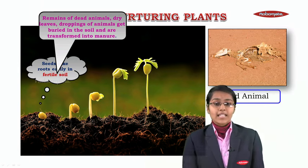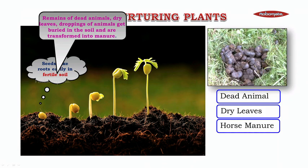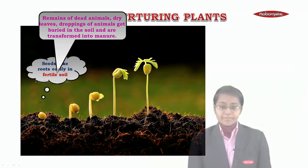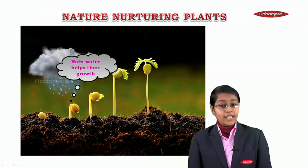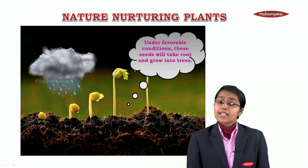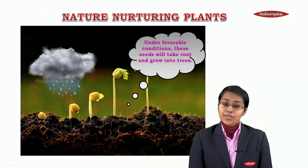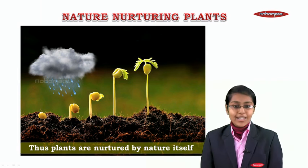Remains of dead animals, dry leaves, and droppings of animals get buried in the soil and are transformed into manure. So dead animals, dry leaves, and animal manure make the soil fertile. Then rainwater also helps the growth of the seed. After that, under favorable conditions these seeds will take root and grow into trees. Thus plants are nurtured by nature itself.